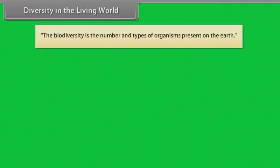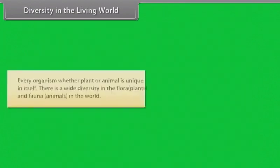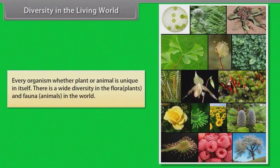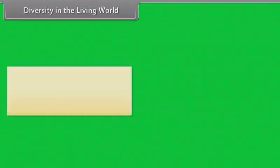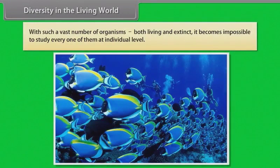Biodiversity is the number and types of organisms present on the earth. Every organism, whether plant or animal, is unique in itself. There is a wide diversity in the flora (plants) and fauna (animals) of the world. The diversity we see today is the result of 3.5 billion years of organic evolution. During the course of this evolution, several species vanished from the surface of the earth and became extinct. With such a vast number of organisms, both living and extinct, it becomes impossible to study every one of them at the individual level.